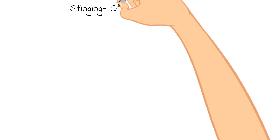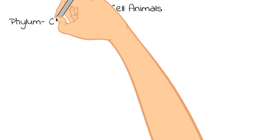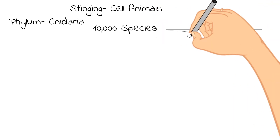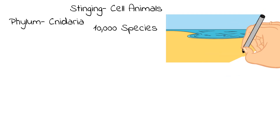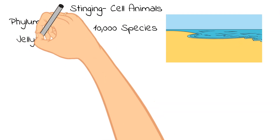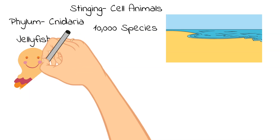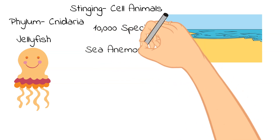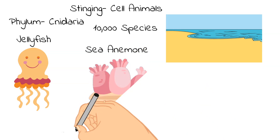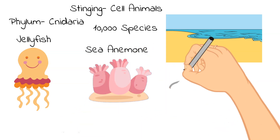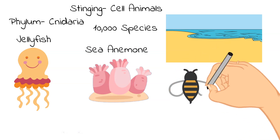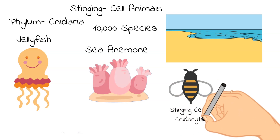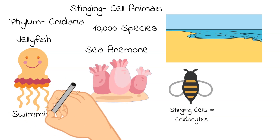Next, let's talk about stinging cell animals. Stinging cell animals are part of the phylum Cnidaria, and this phylum contains over 10,000 species of animals. They are all found in fresh water or marine environments, but like sponges are mostly found in the ocean. Some examples from the phylum Cnidaria are jellyfish and sea anemones. What makes this phylum special is they have things called cnidocytes — cells that they use to capture prey. They are essentially stinging cells. There are two types of cnidarians: the swimming medusa and the sessile polyps.